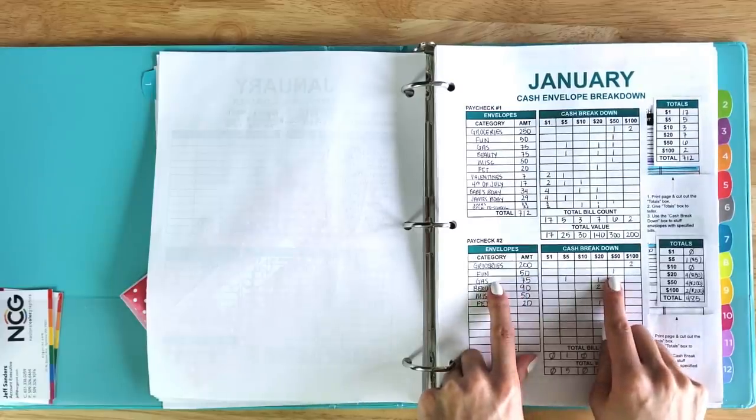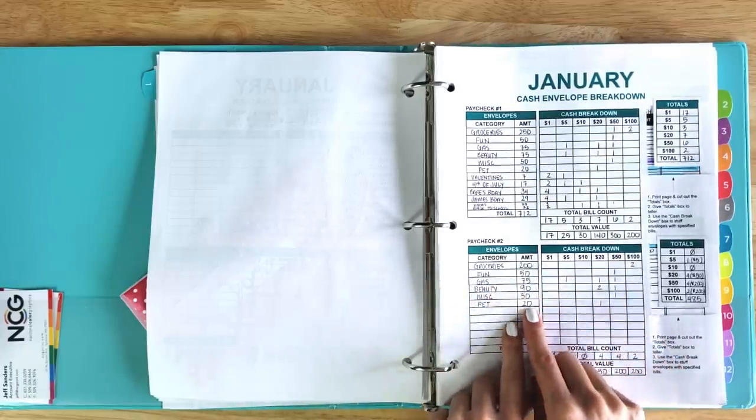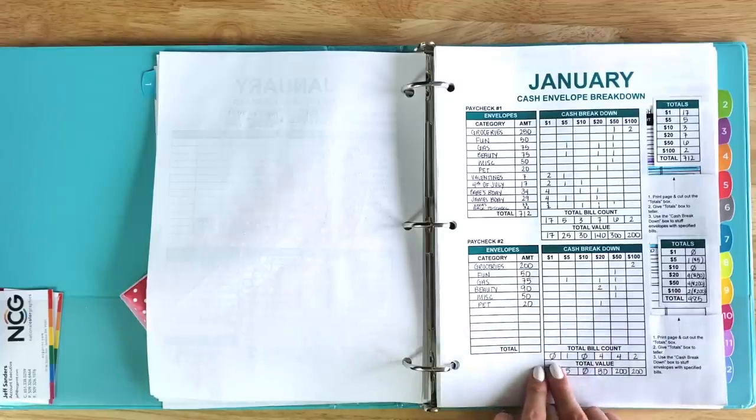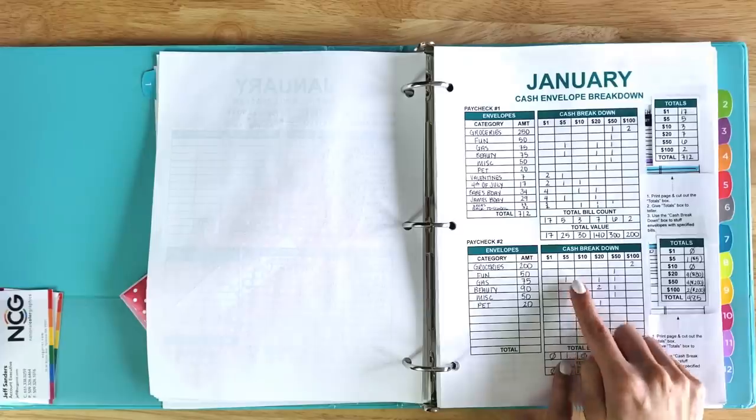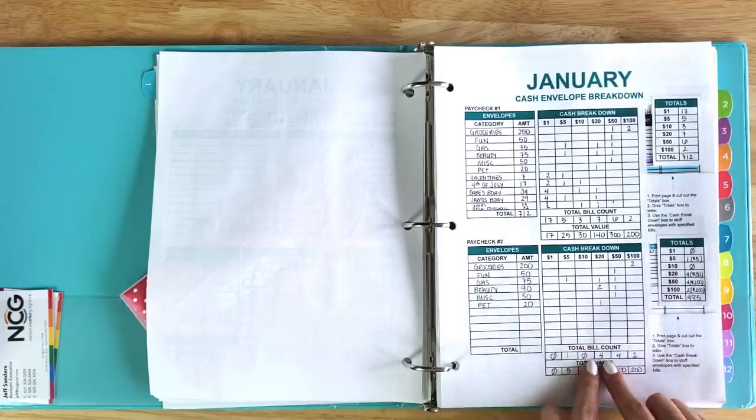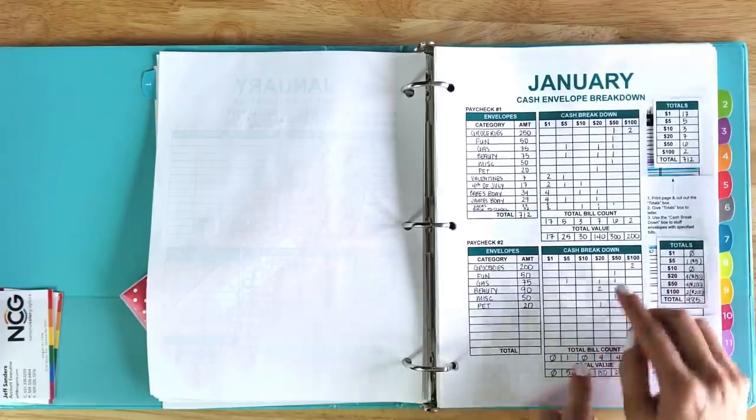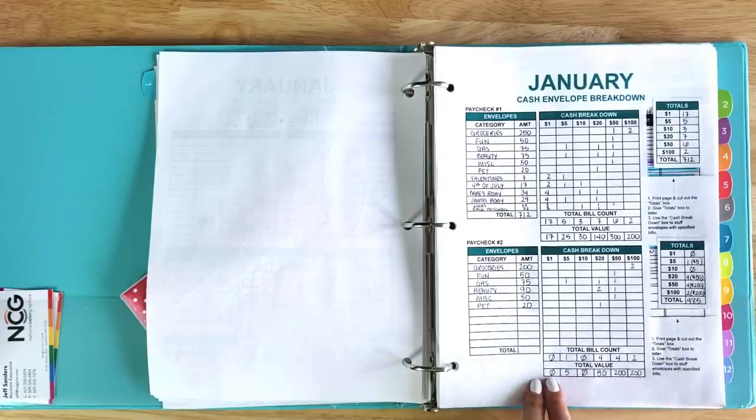Groceries, I need a $50 bill, and you do that for each one of your envelopes. Down here, there's a total bill count. I need $150, $010, $420, $450, etc.